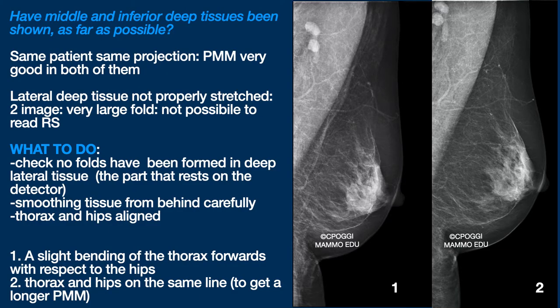Same patient, same projection here. The shape of the muscle is correct in both cases. But you can see what happened in the first one: a very important and extended fault was created in the retromammary space. This is a patient with a slender thorax. Faults are easily formed between the deep lateral tissues and the detector. We have to correct that, even if in this case there is no gland there. We have to stretch the tissue from behind the thorax, posteriorly, very carefully, so as not to displace tissue that we have to show on the image.